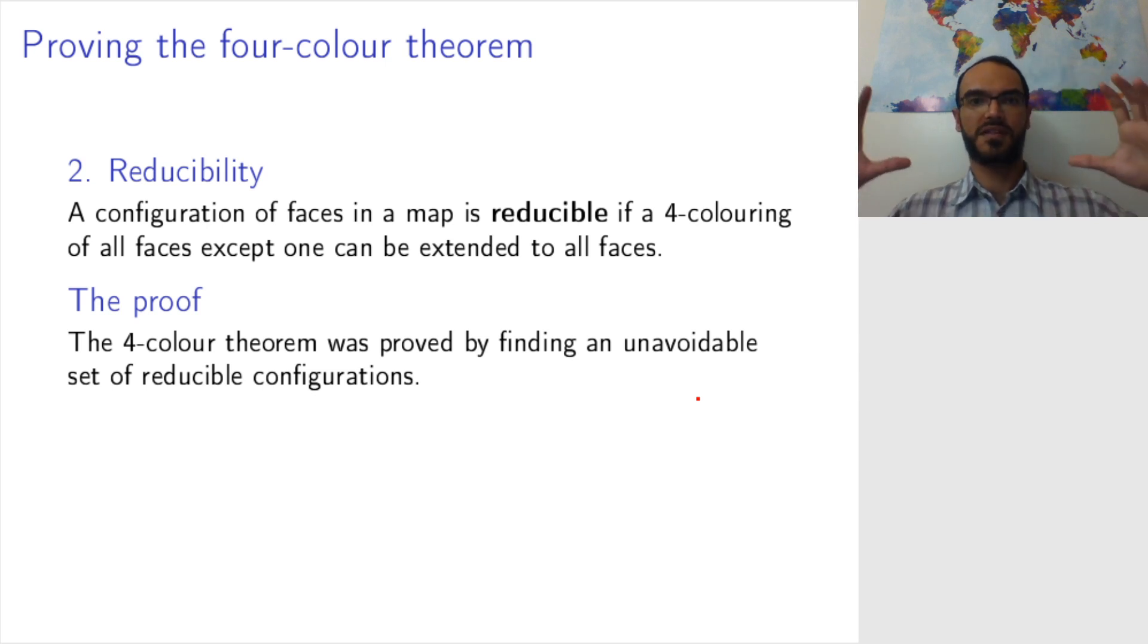They proved it by showing that there exists an unavoidable set of reducible configurations. So there is a set like this triangle rectangle pentagon that I showed you on the last slide. There is such a set consisting of a bunch of configurations that are all reducible, meaning that if in each configuration you color all faces but one, you can color all faces.